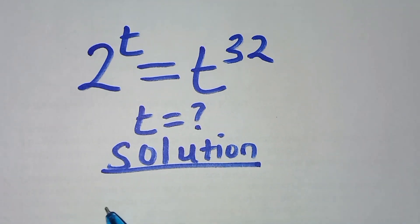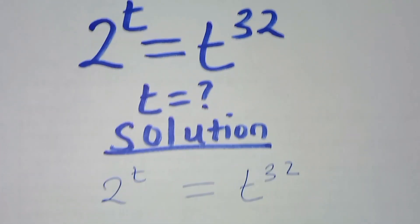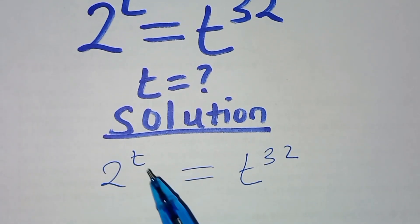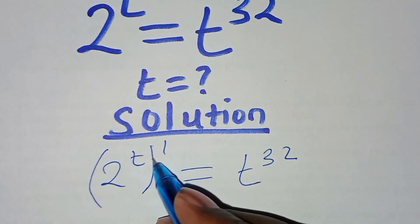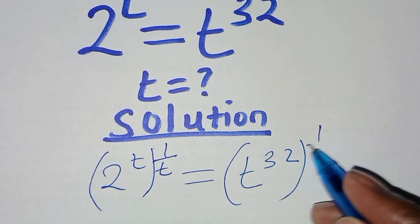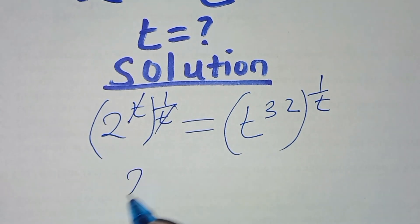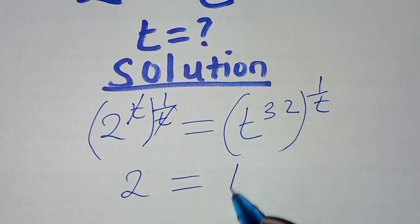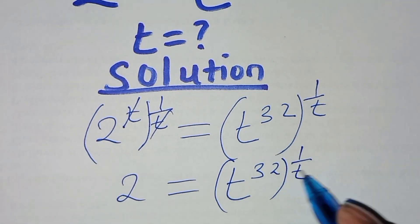Solution here: we have 2 to the power t, equal to t to the power 32. Let's put the variable t on one side and the constant terms on the other side. To do that, we multiply both sides by 1 over t. Now let's simplify. So this gives us 2 is equal to t to the power 2 raised to the power 1 over t.